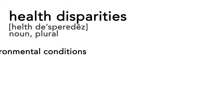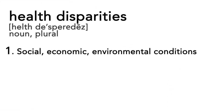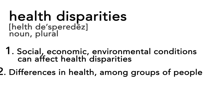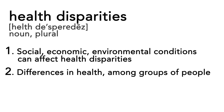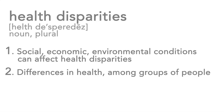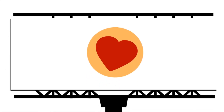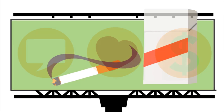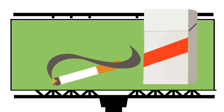Social, economic, and environmental conditions can affect health disparities, which are differences in health among groups of people. Health behaviors affect disparities. If people are not educated on how to lead a healthy lifestyle, or they lack social and financial support to make healthy choices, they may choose certain behaviors over others.